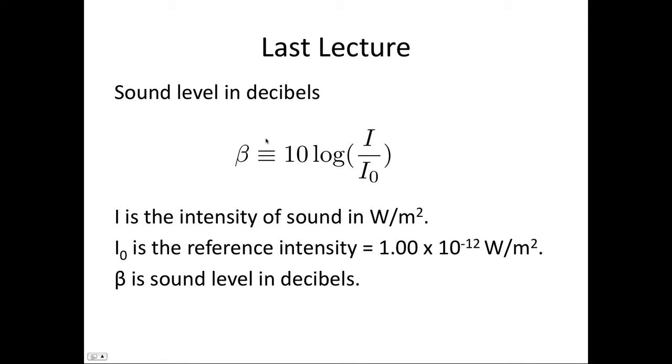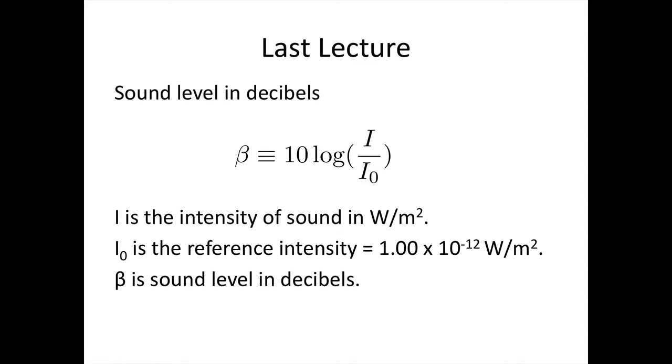We saw sound levels were defined by beta and they're measured in decibels. They're given by 10 log to the base 10, I on I0, where I0 is the reference intensity, the lowest intensity of sound that we can hear at a thousand hertz.